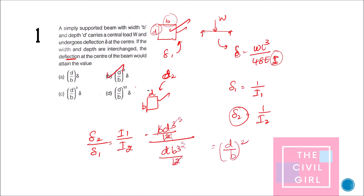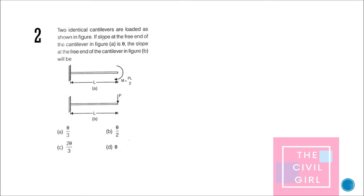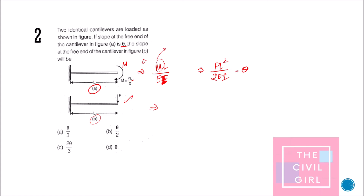Next question: two identical cantilevers are loaded as shown. If the slope at the free end of the cantilever in figure A is θ, what is the slope at the free end of the cantilever in figure B? The formula for slope with an applied moment M is θ = ML/EI. Given M = PL/2, substituting gives θ = PL²/2EI. The slope formula for the other loading condition is also PL²/2EI. Comparing both, they are equal, so the slope at that point is also θ. The answer is option D.